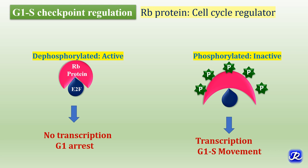The RB protein is regulated by phosphorylation and dephosphorylation. The dephosphorylated or hypophosphorylated form is active because the transcription factor E2F is bound to RB protein, leading to no transcription and G1 arrest. The phosphorylated form of retinoblastoma protein is inactive because when RB protein is phosphorylated, E2F is released, leading to transcription of genes required in S phase and movement of the cell from G1 to S phase.